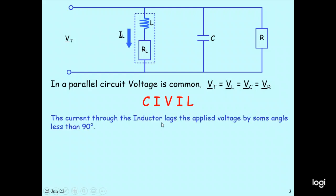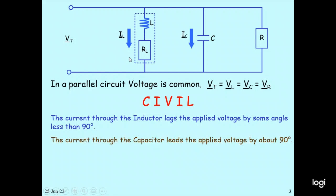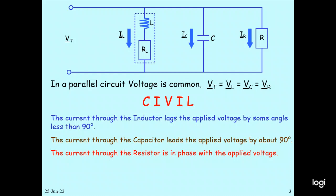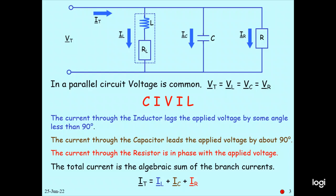In a parallel circuit, the voltage is common: VT equals VR equals VC equals VL. The current through the inductor lags the applied voltage by some angle less than 90 degrees, so the inductor current IL lags the applied voltage by 90 degrees. The current through the capacitor leads the applied voltage by 90 degrees — IC leads the applied voltage by 90 degrees. The current through the resistor IR is in phase with the applied voltage. The total current IT is the phasor sum of the branch currents: IT equals IL plus IC plus IR.